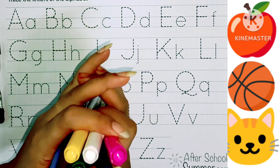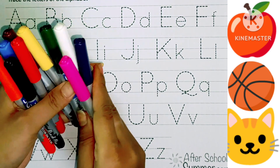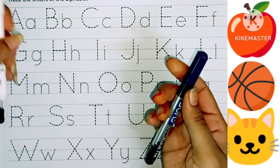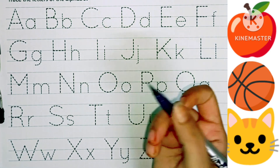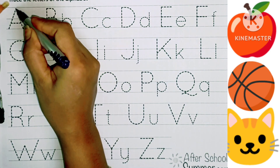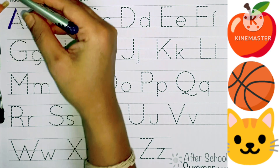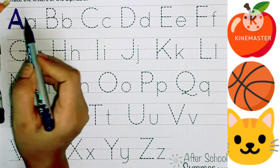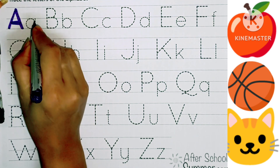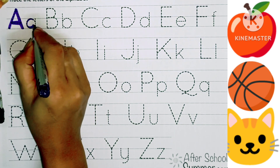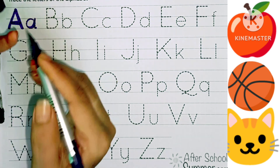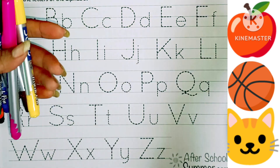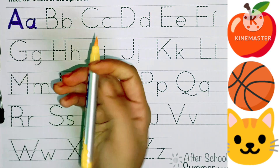Now we write ABCD alphabets. A. A for apple. Small letter A. A for apple. A color.